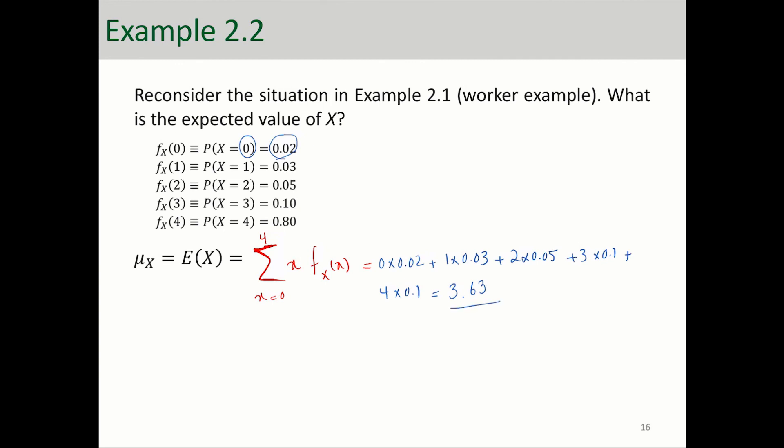Something to consider here is that the average is not necessarily a viable observation of that random variable. You know that in reality you cannot have 3.63 number of tasks being done correctly, but that shows the central tendency of this random variable. It's somewhere between three or four, more towards four.